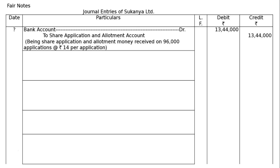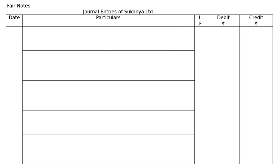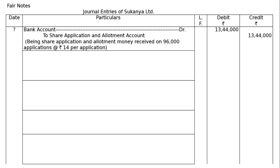First entry: Bank Account debited to Share Application and Allotment Account. Being share application and allotment money received on 96,000 applications at ₹14 per application. Debit: ₹13,44,000. Credit: ₹13,44,000.